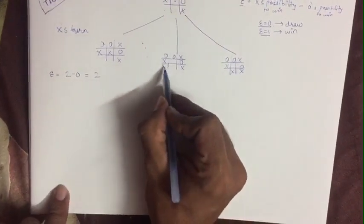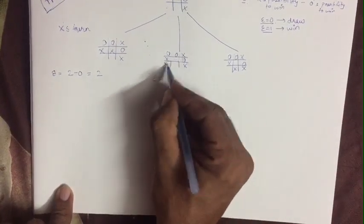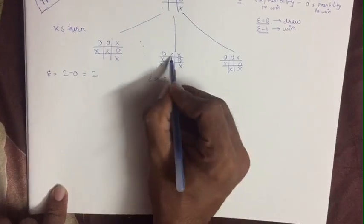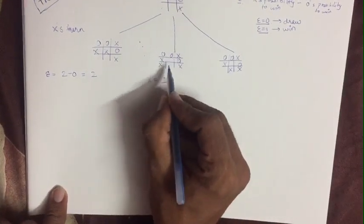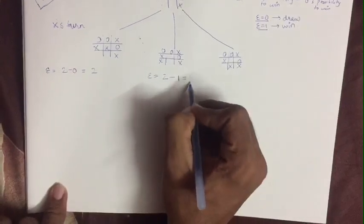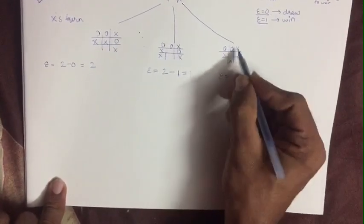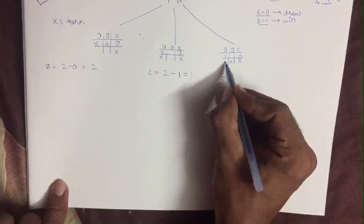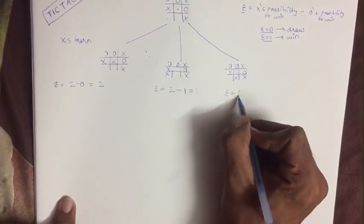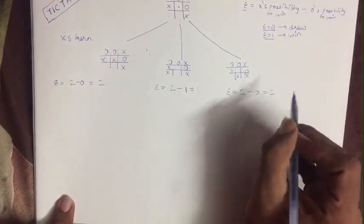In the second placement, X possibility will be 1 and 2, and O possibility will be 1. So E will be equal to 1. Now here E will be 1 and 2 for X, and for O it will be 0, so 2 minus 1 equals 2.